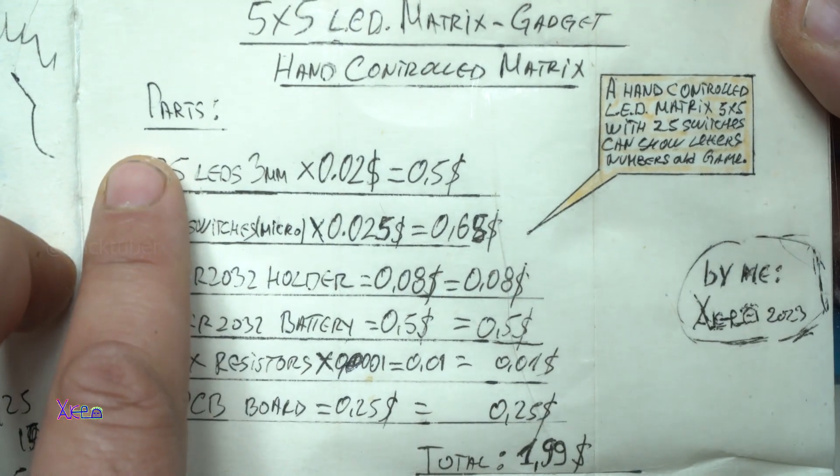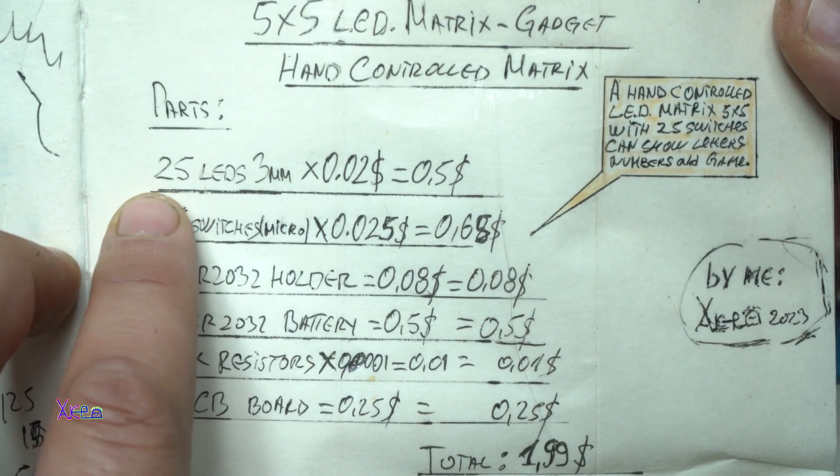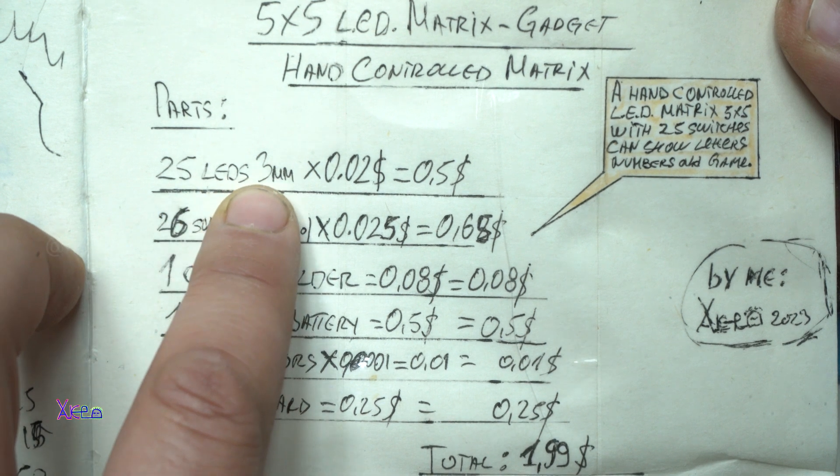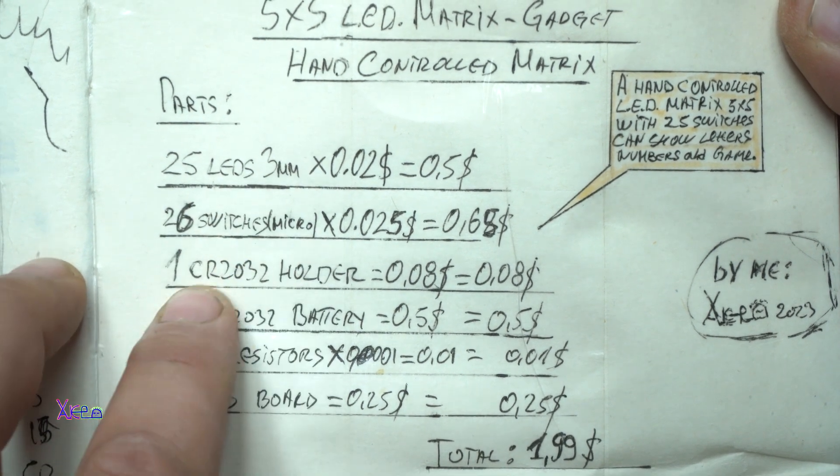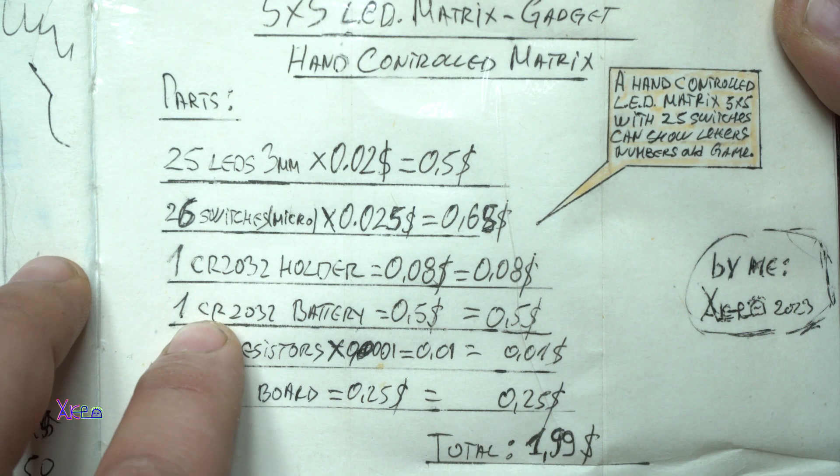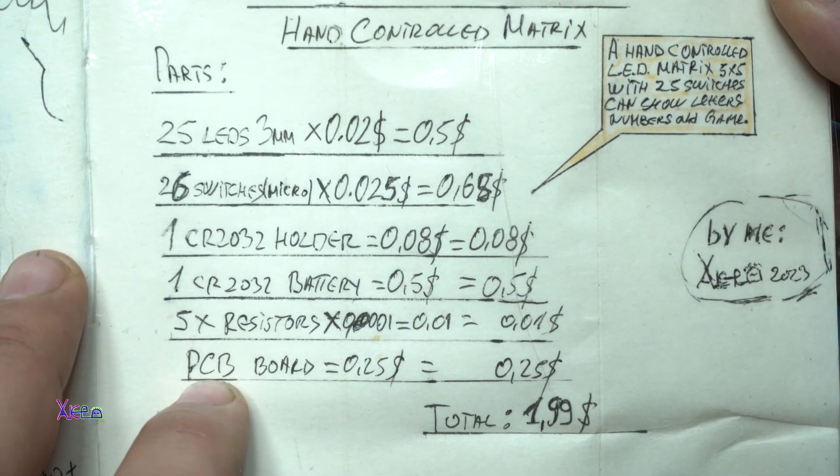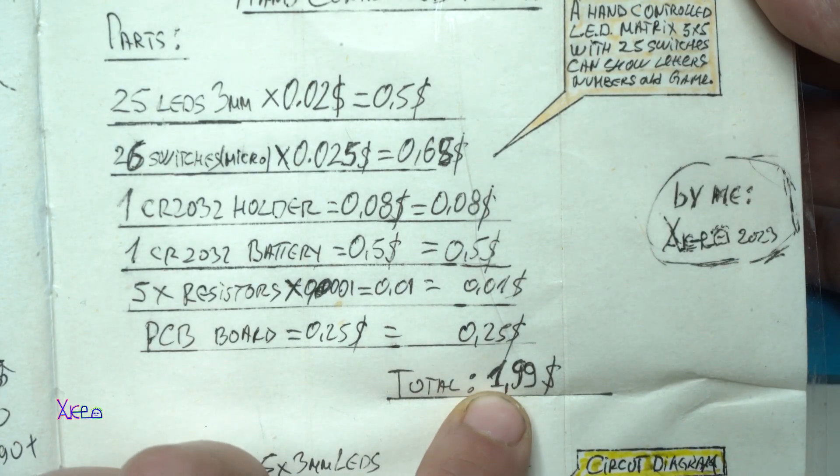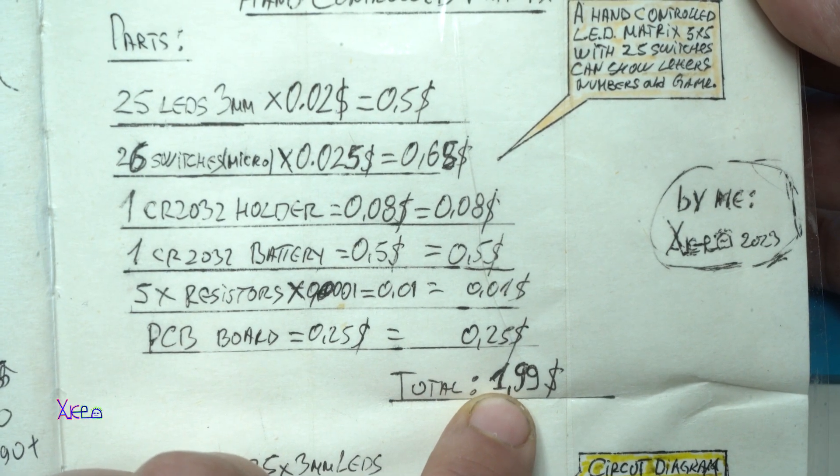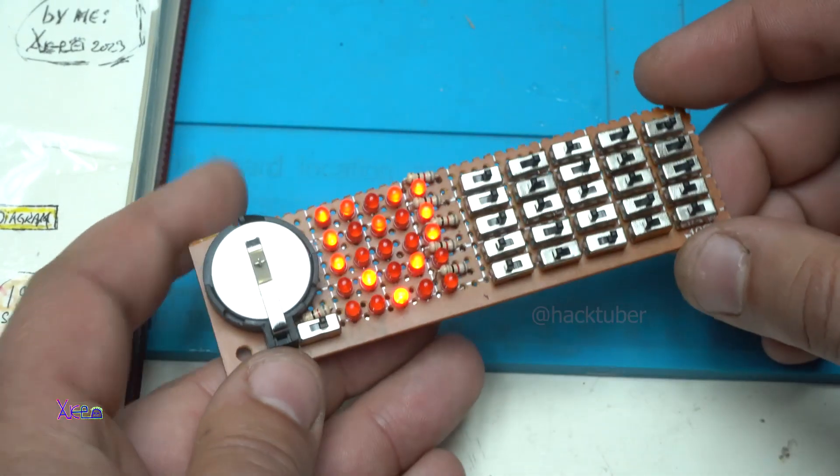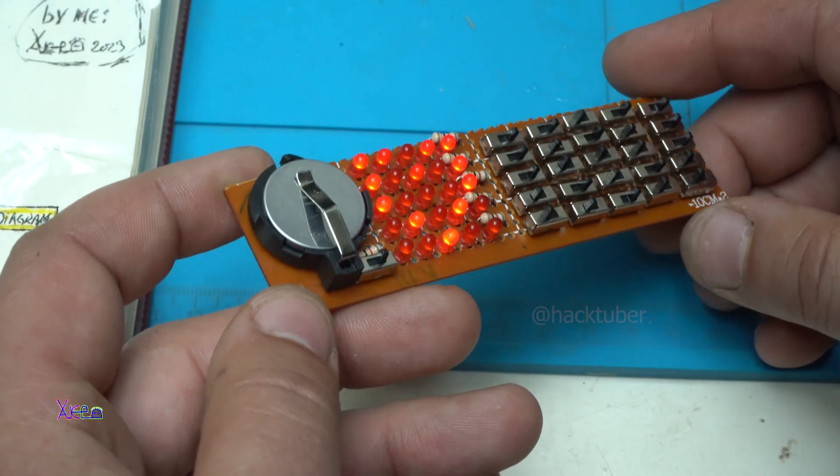I have all the parts that I used in the project. You need 25 LEDs 3mm, 26 switches, one coin battery, one battery holder, 6 resistors, and PCB board. All total, 1.99 cents, or 2 dollars. For making this gadget you need 2 dollars for parts.